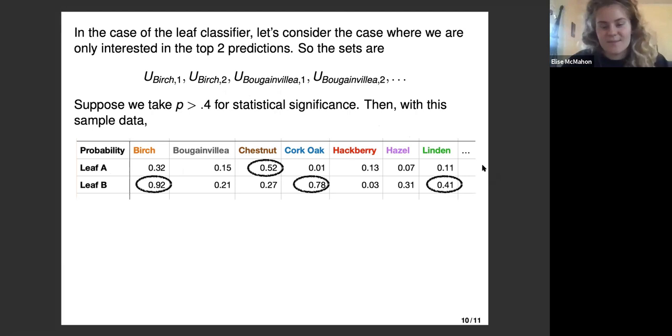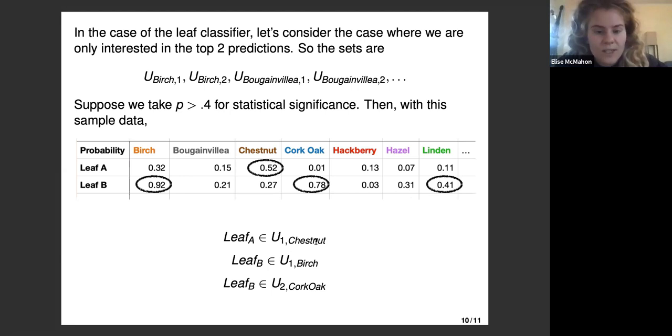We see that leaf A, assuming that I don't have anything else significant going on after this first seven types, leaf A's only prediction that's statistically significant is chestnut. Leaf B has three. We would have that leaf A is in U_chestnut,1 and it's not in any other sets. Leaf B is in U_birch,1 because that's the top prediction, and it's in U_cork oak,2 because it's the second prediction. It's not in anything corresponding to linden because we're only taking the top two predictions.